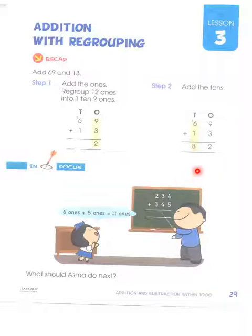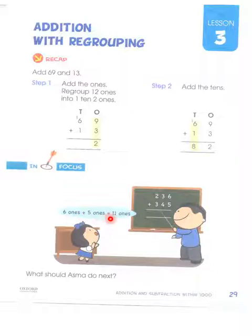So now we understand what is meant by carrying. What is meant by carrying? If something becomes more than 9 after adding, then it becomes a 10. And 10 we cannot write in the ones place, so we carry it to the tens side. So 6 ones plus 5 ones is equal to 11 ones. What should Asma do next?